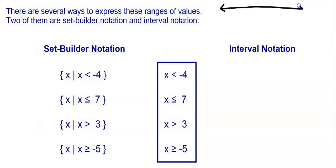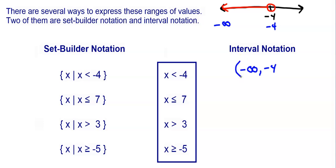Let's write x is less than negative 4 in interval notation. It's all the numbers less than negative 4, with an open circle since it's not equal to. Going left means going to negative infinity, so the smallest number is negative infinity. The largest is negative 4. Infinity always gets a parenthesis, and negative 4 is an open circle, so it also gets a parenthesis: (−∞, −4).